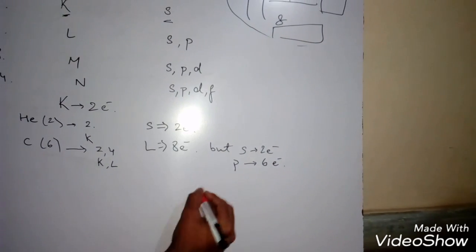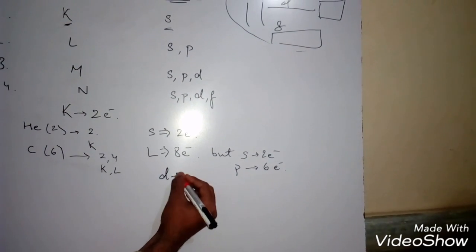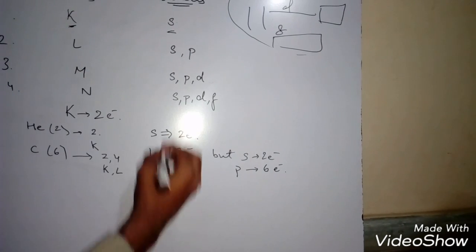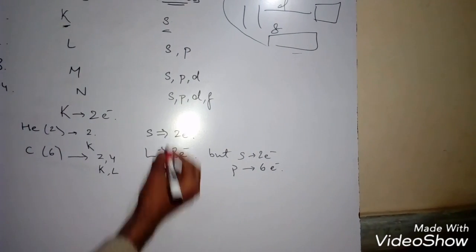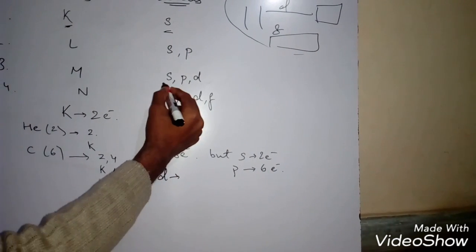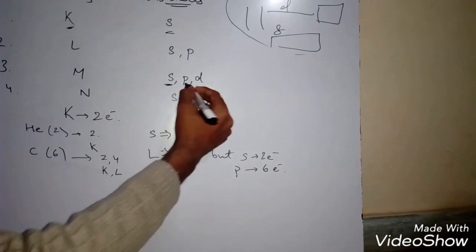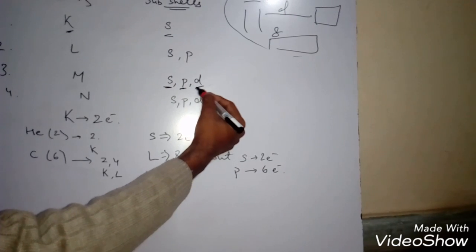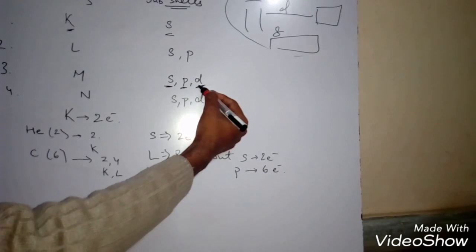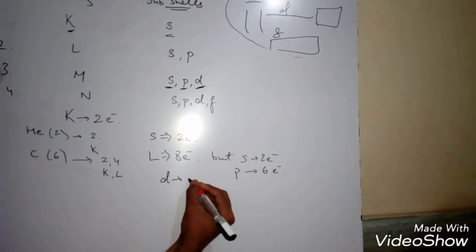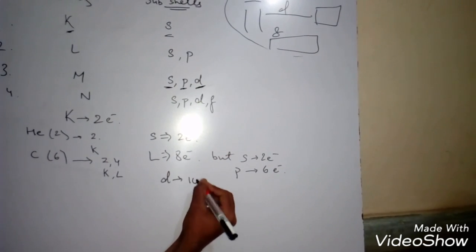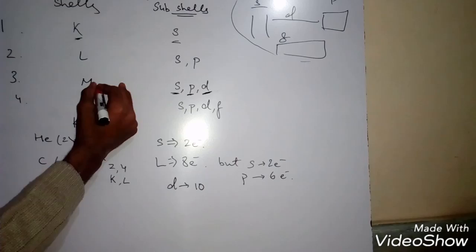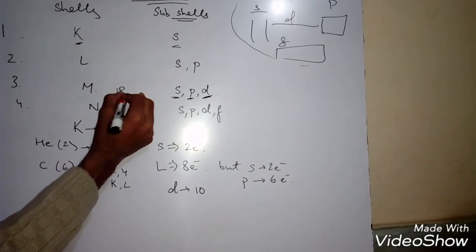P holds six electrons. Now talking about D in the M shell: S holds two electrons, P holds six electrons, and the total electrons in M are 18. So D holds ten electrons.